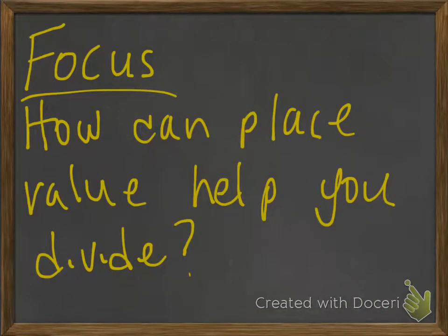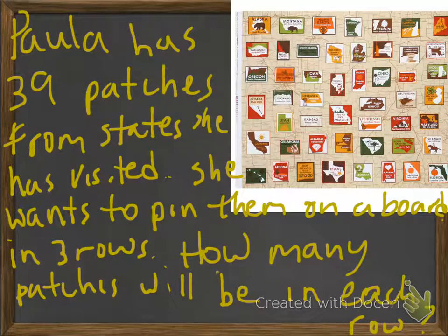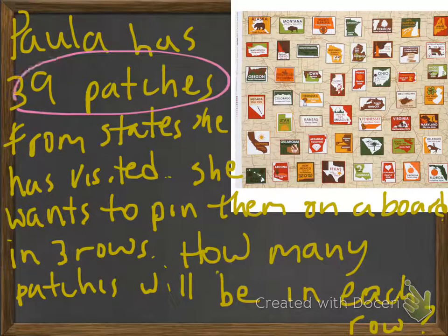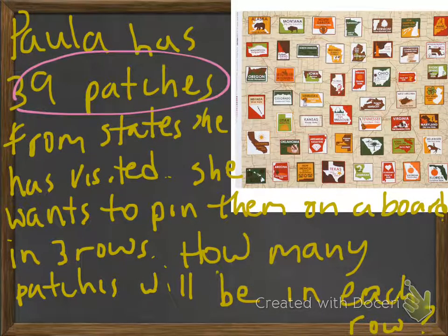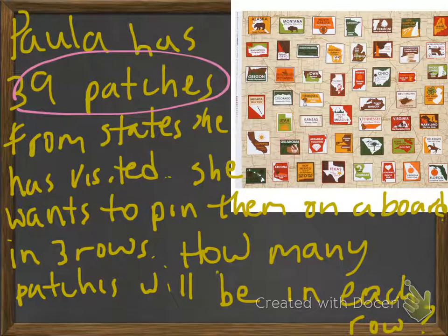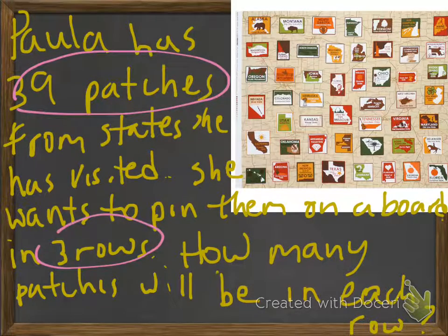Our focus is: how can place value help you divide? Let's take a look at an example. Paula has 39 patches from states she has visited. She wants to pin them on a board in three rows. How many patches will be in each row?